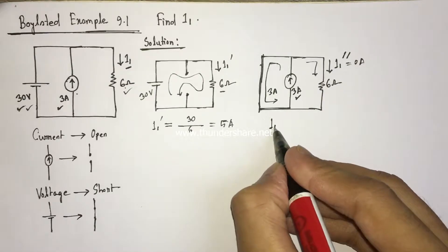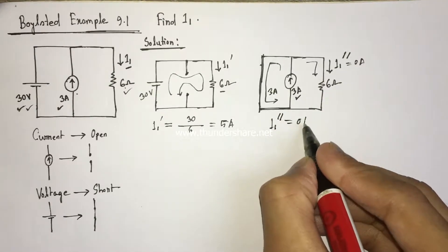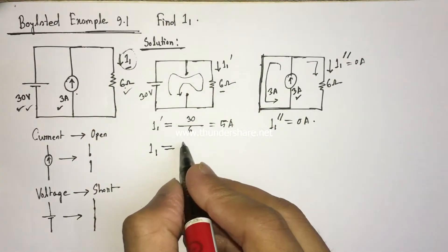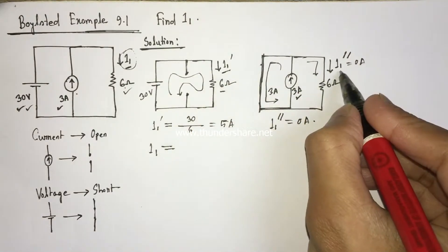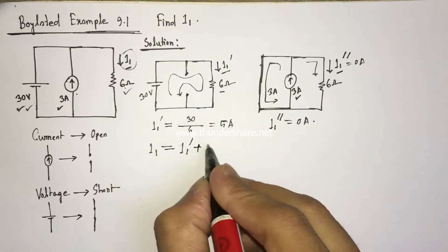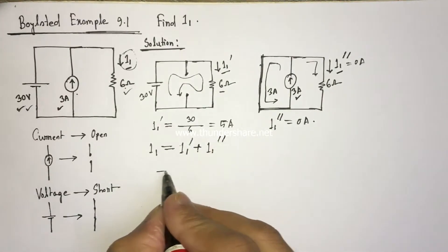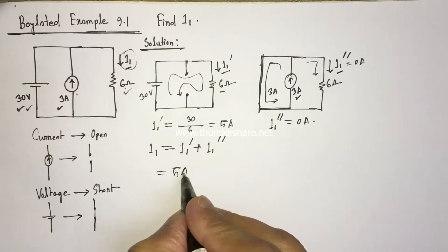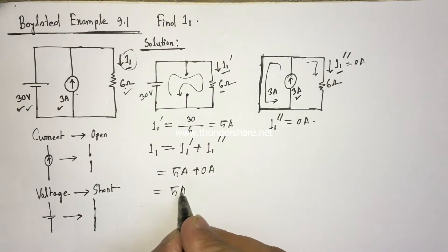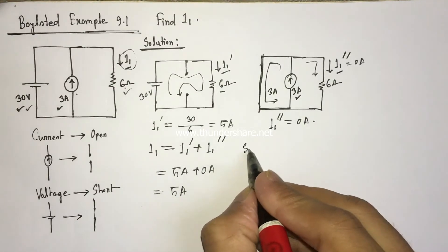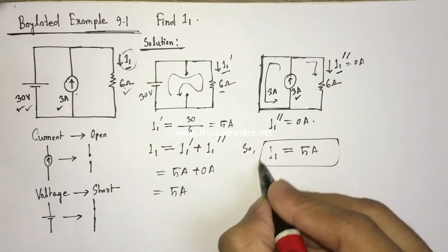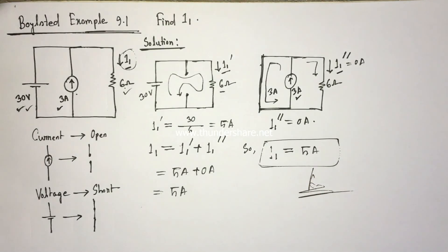So we find that I1 double prime is 0 ampere. Now I1 is equal to I1 prime plus I1 double prime. I1 prime is 5 ampere and I1 double prime is 0 ampere, so I1 equals 5 ampere. This is the answer. Thanks for watching.